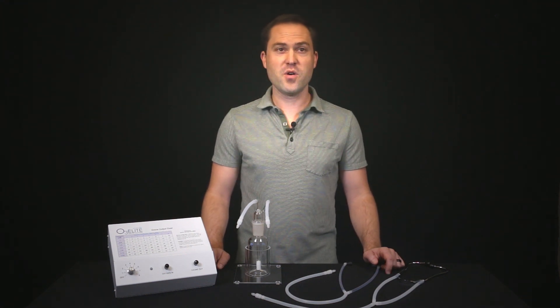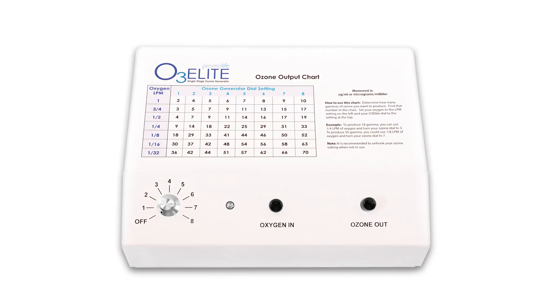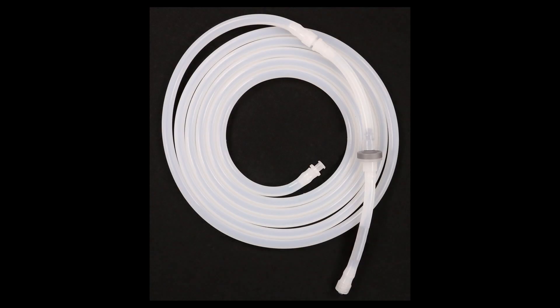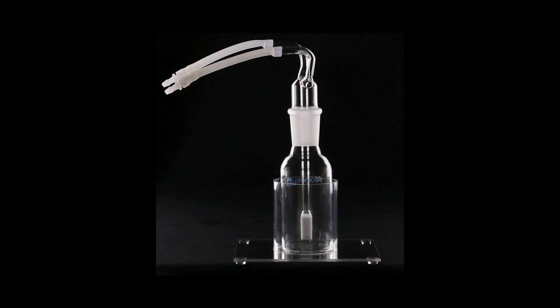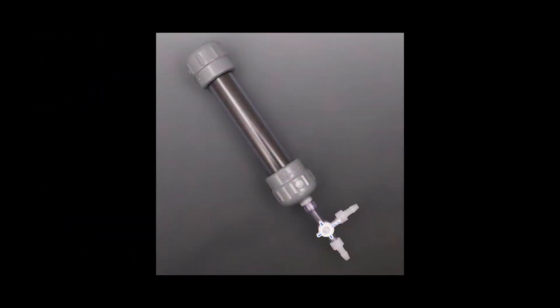To begin, first make sure you have all the accessories needed. Those include an O3 Elite Single Ozone Generator, tubing with a check valve attached to 5 feet of silicone tubing, an Ozone Humidifier, two 3-foot sections of silicone tubing, an Ozone Destruct System, and an Ozone Ear Scope.